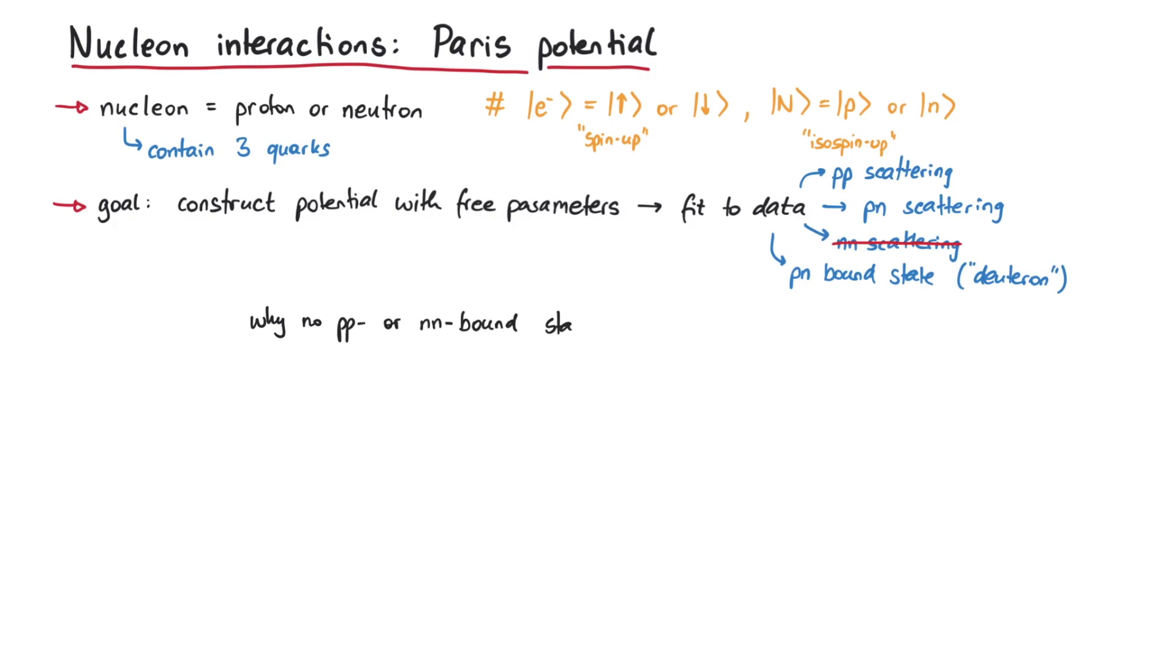This immediately leads to a question. As far as the strong interaction is concerned, the difference between a proton and a neutron is just the mass difference between the up and the down quark, since strong interactions do not care about electric charge or quark flavors. So, since the strong interaction should work almost the same between proton and proton, protons and neutrons, as well as neutrons and neutrons, why are there only proton-neutron bound states and no proton-proton or neutron-neutron bound states?